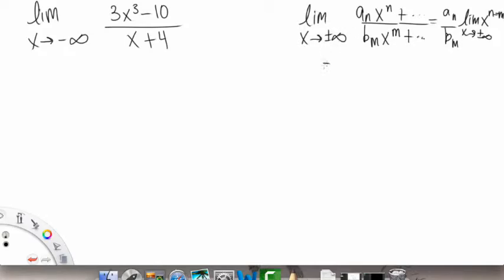Sorry, I really squished that in there. I'll rewrite it here. So aₙ over bₘ times the limit as x goes to plus or minus infinity of x^(n-m). There we go. Okay, so just ignore that thing that was kind of squished there.